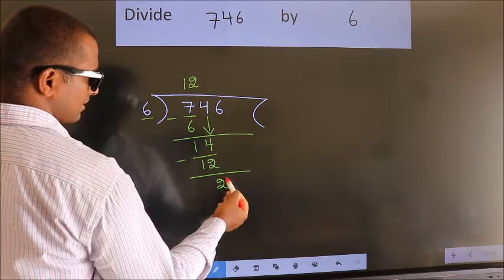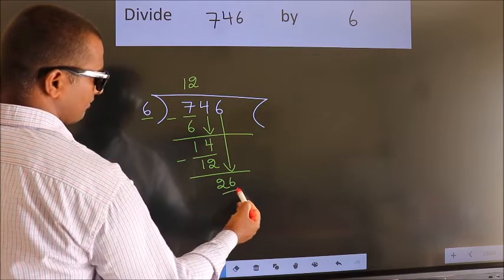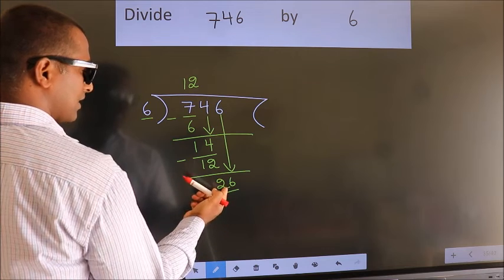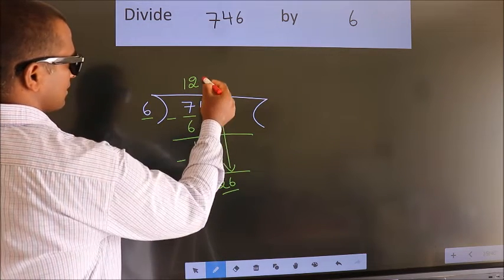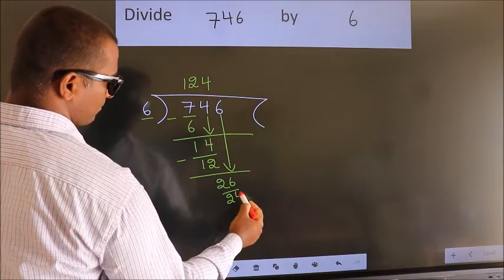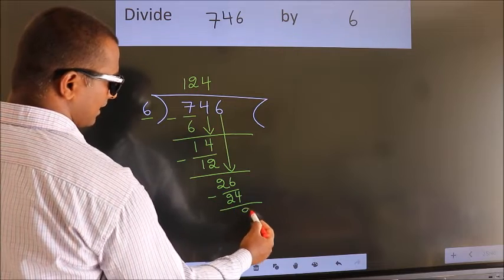After this, bring down the beside number. So 6 down. So 26. A number close to 26 in 6 table is 6 fours, 24. Now we subtract. We get 2.